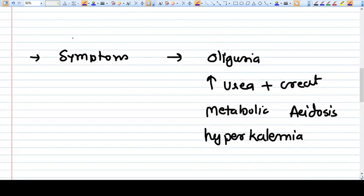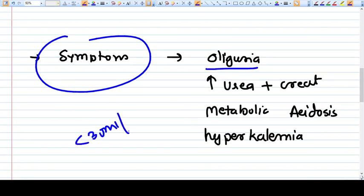What are the symptoms? The symptoms are oliguria - the urine output is less than 30 ml per hour.